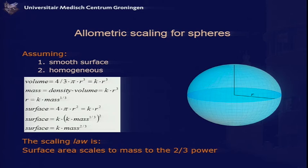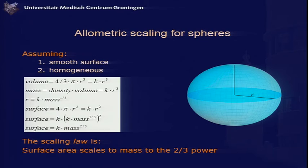Let's make a very simple allometric scaling law — something that we can understand. Take a sphere of radius r with a smooth surface and that is homogeneous. You can make some calculations using standard formulas — this is all high school math. Volumes are a constant times r cubed. Radius is some constant times mass to the one-third. Surface areas are some constant times mass to the two-thirds. Reducing everything to k as a variable constant, since you're mostly interested in the scaling exponent, for surface area the surface area scales to mass to the two-thirds power.